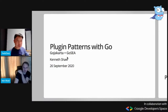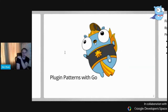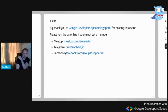Ken Shaw here, I am the CTO of Broncos and also the founder of Go Jakarta, which is the largest Go meetup group in the world. We have just under 9,000 members, which is almost 25% larger than any other Go group in the world today. My talk is on plugin patterns with Go.